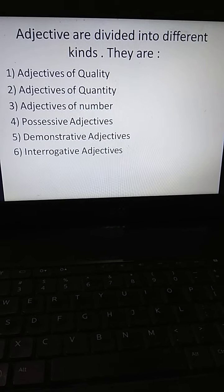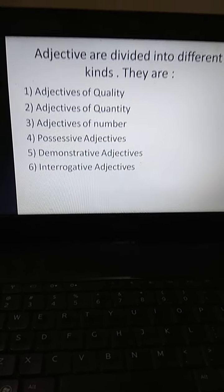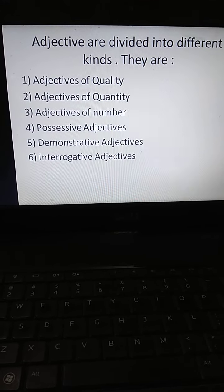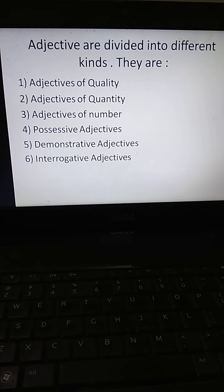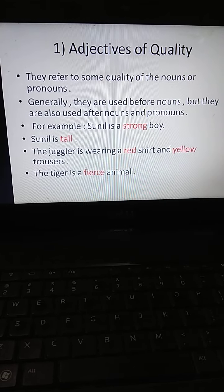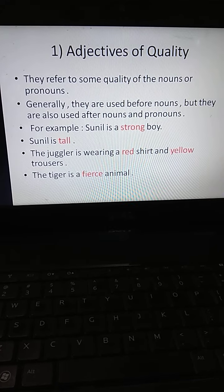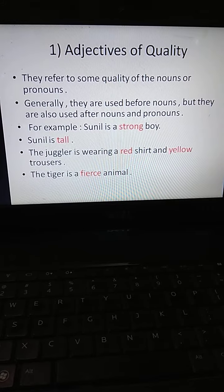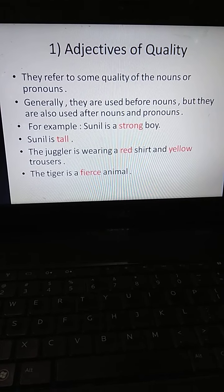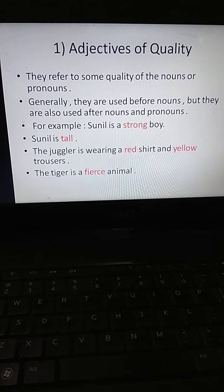Adjectives are divided into different kinds. They are adjectives of quality, adjectives of quantity, adjectives of number, possessive adjectives, demonstrative adjectives, and interrogative adjectives. Adjectives of quality refer to some quality of the nouns or pronouns. Generally, they are used before nouns but they are also used after nouns and pronouns.